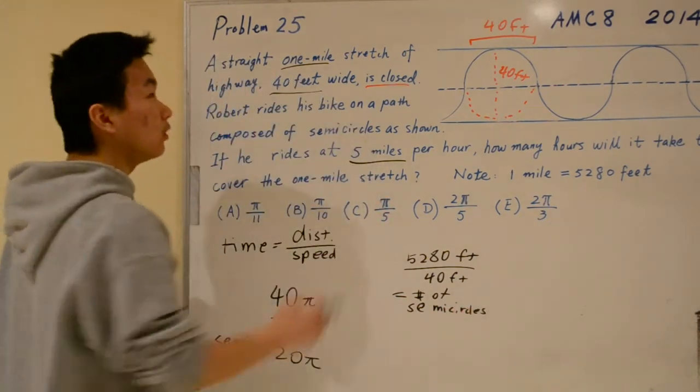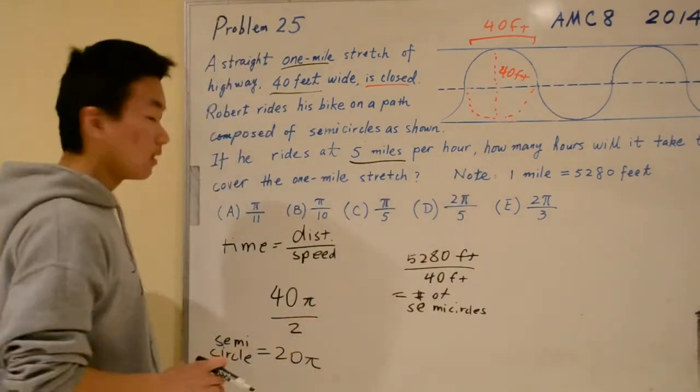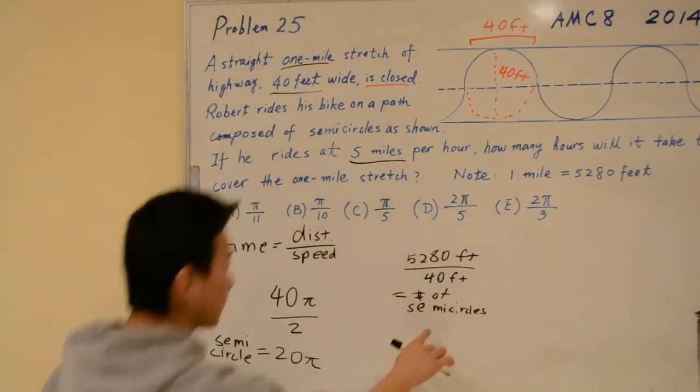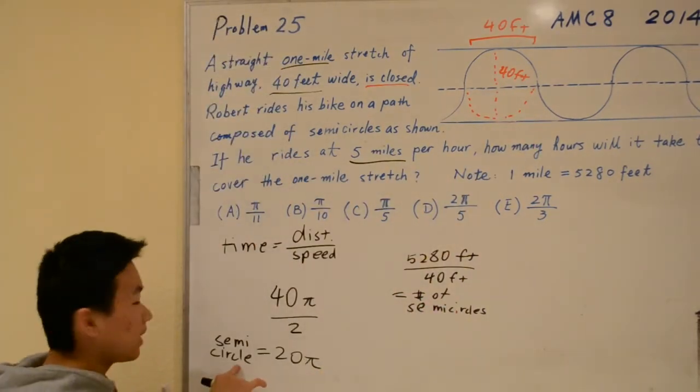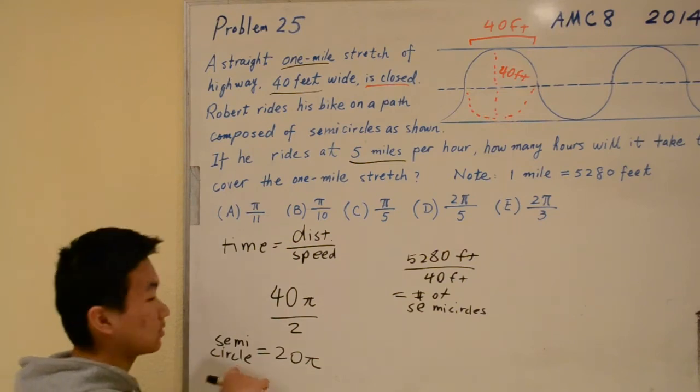To get the total length of the path, we multiply the number of semicircles by the distance of each semicircle.